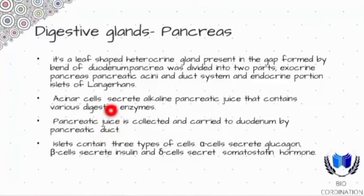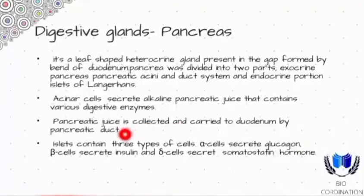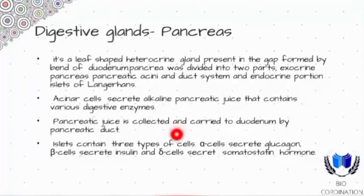Through a duct — this is the exocrine part. The Islets of Langerhans contain three types of cells: alpha cells secrete glucagon, beta cells secrete insulin, and delta cells secrete somatostatin hormone.